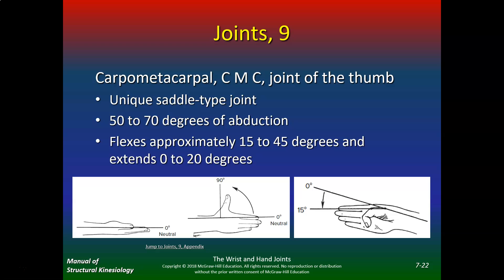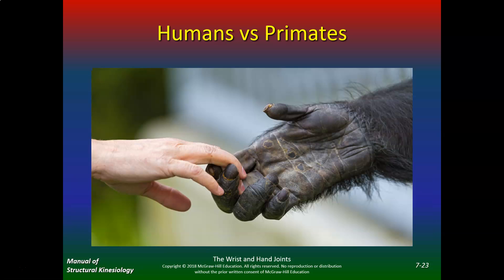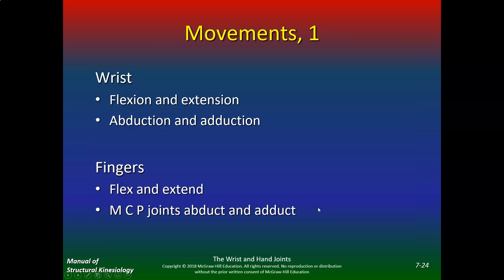The interphalangeal (IP) joint of the thumb flexes 80–90 degrees. The CMC joint of the thumb is a unique saddle-type joint that does 50–70 degrees of abduction, flexes approximately 15–45 degrees, and extends 0–20 degrees. Looking at the thumb here versus the thumb on primates illustrates what makes the opposable thumb unique to humans.